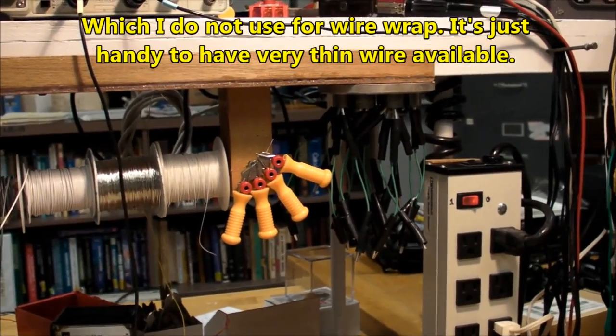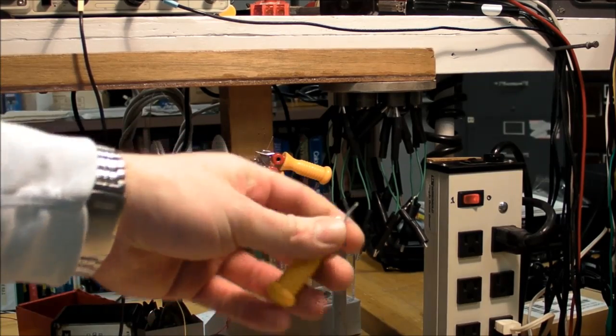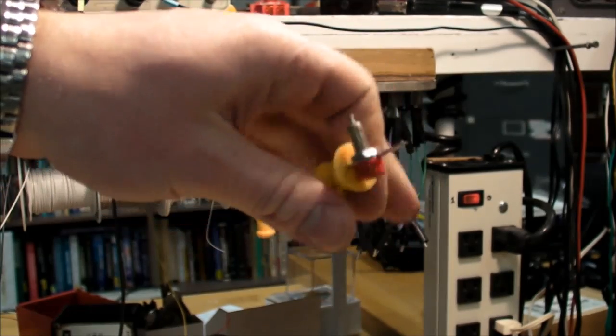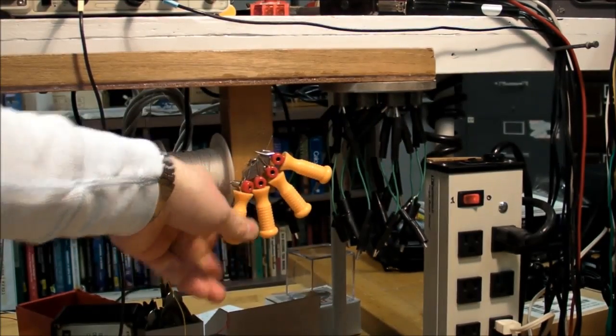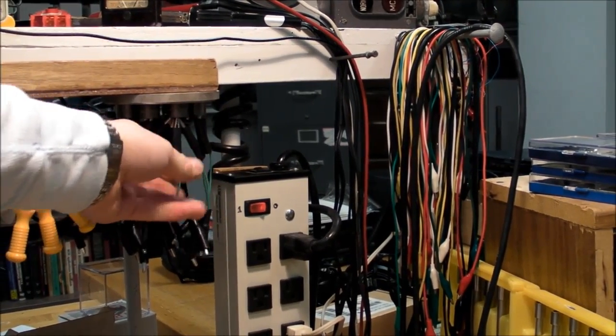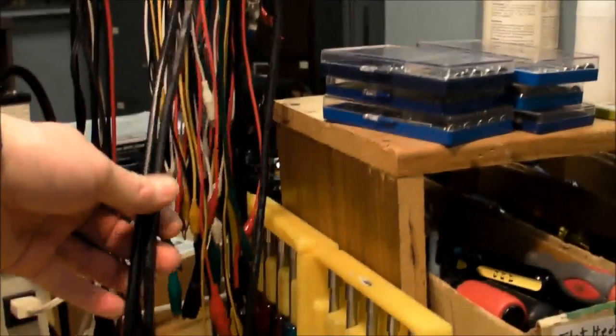And this spot got these little corn cob holder probes that I made - I made a video about those a while back. And right here is a bunch of short alligator leads stuck on magnets up here, and then the longer alligator leads right here.